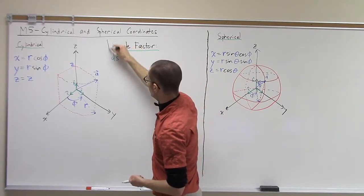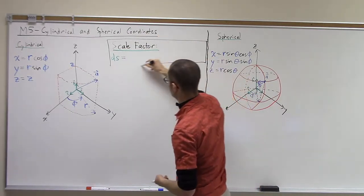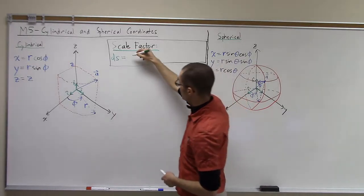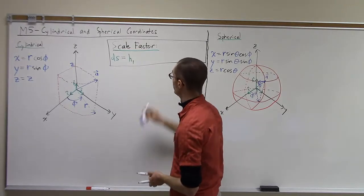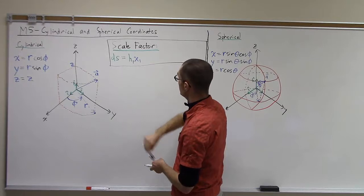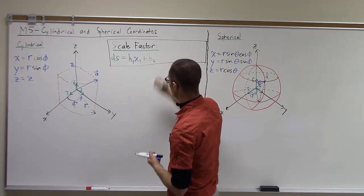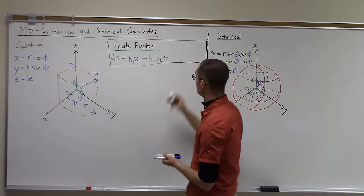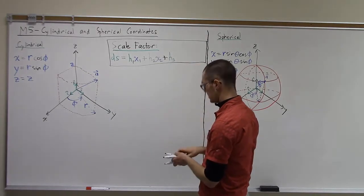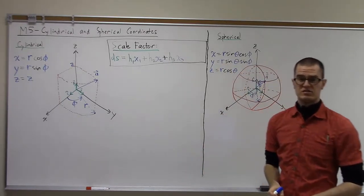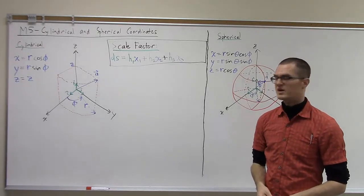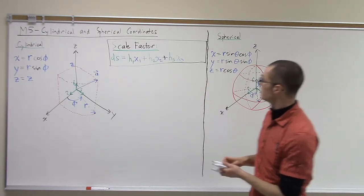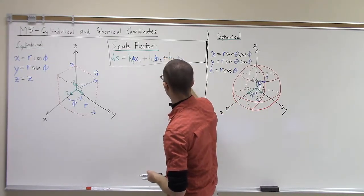In general, this is a statement that relates to any curvilinear coordinate system, not necessarily cylindrical or spherical. The ds — a small change in distance or path length — is going to be a sum of scale factors: H1 times dx1, plus H2 times dx2, plus H3 times dx3. We'll assume here we're working in a three-dimensional system, though this could extend further depending on the theory.